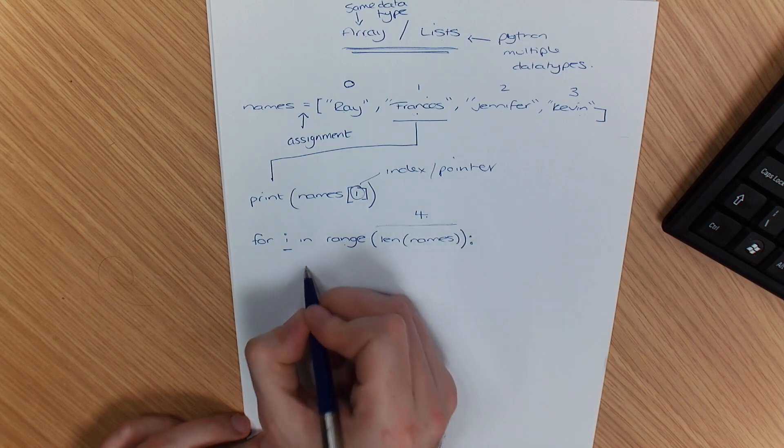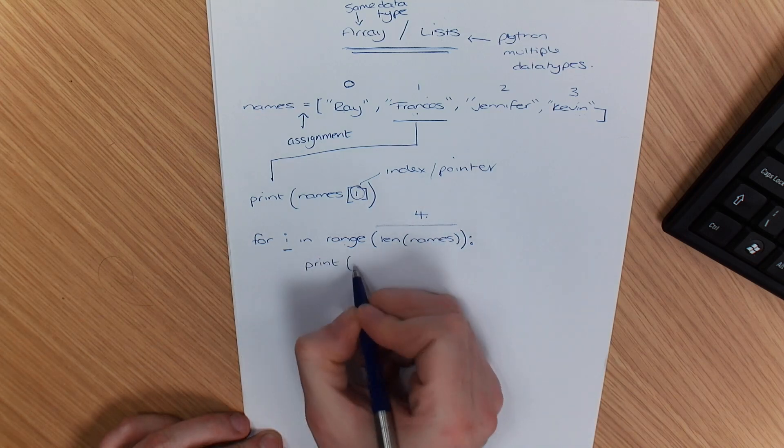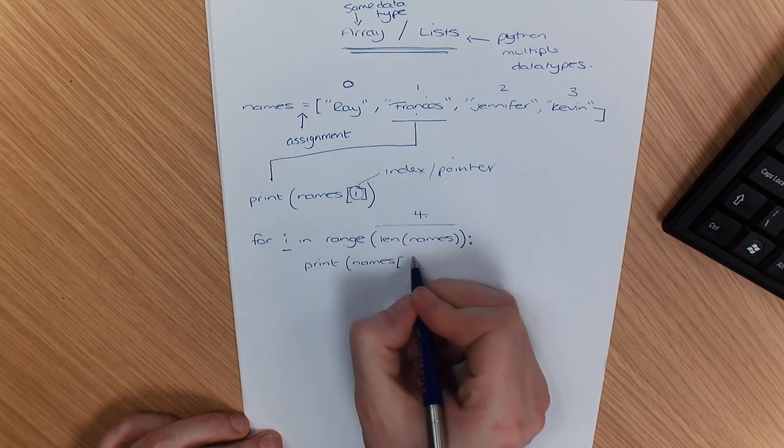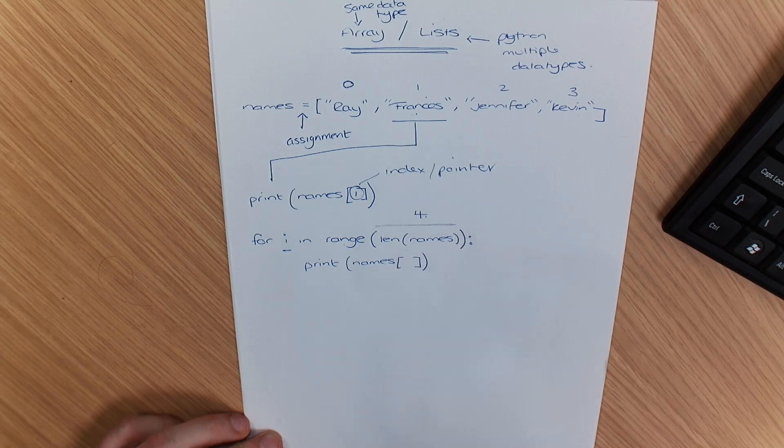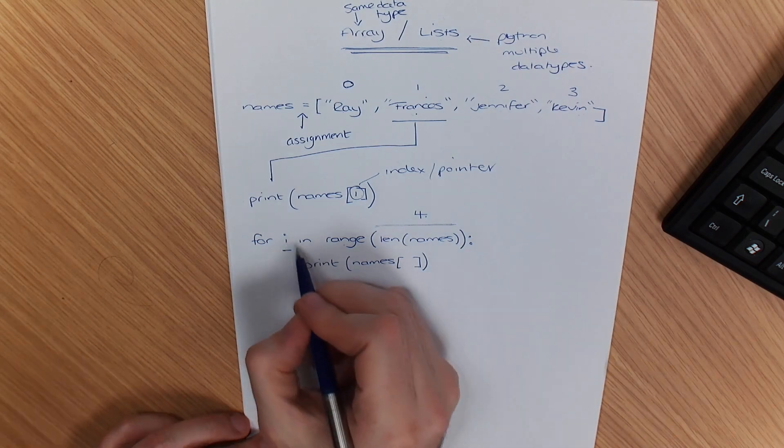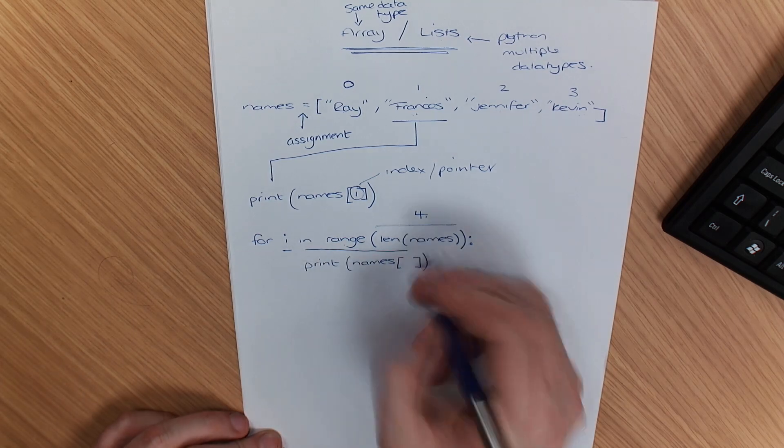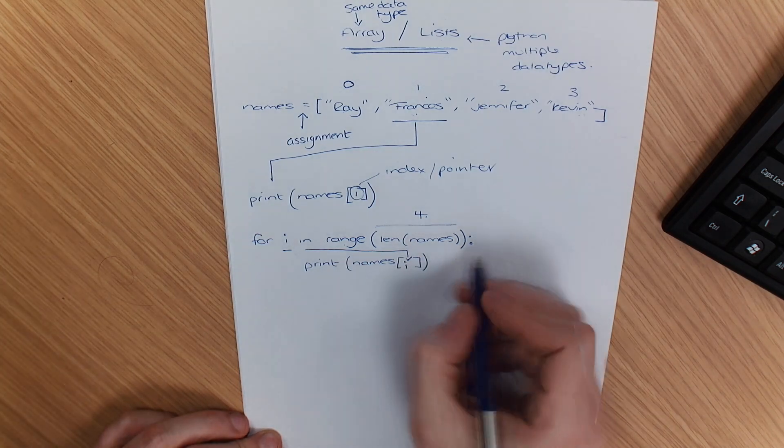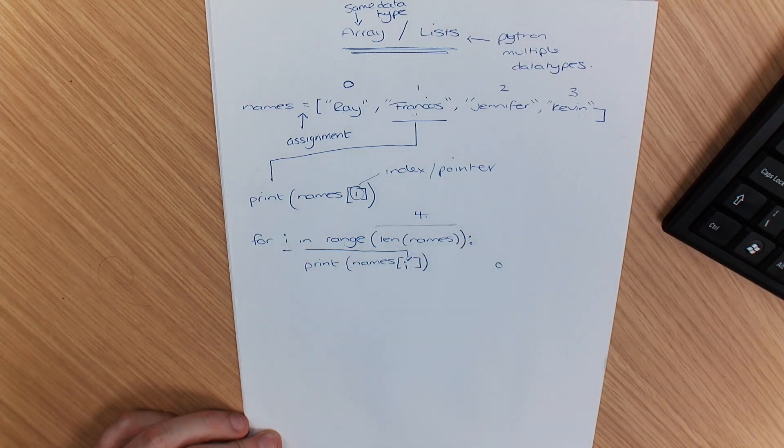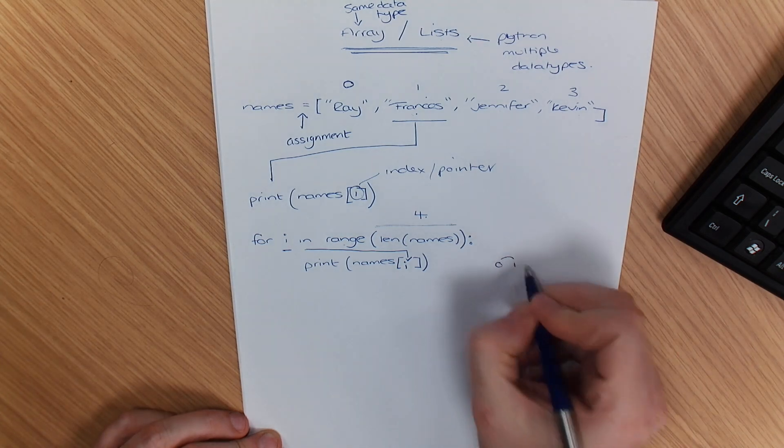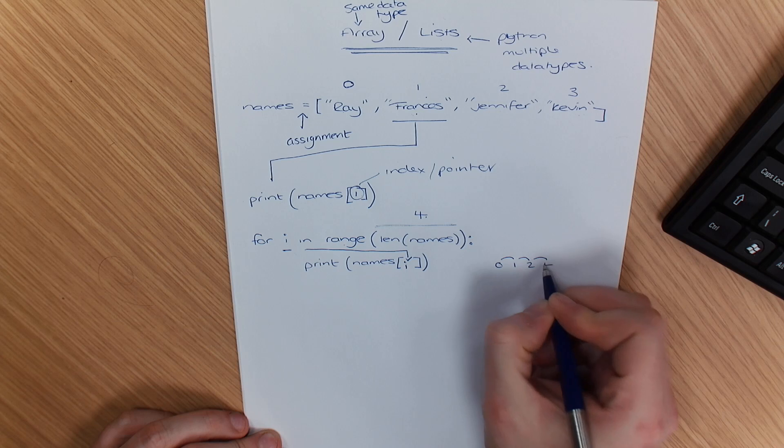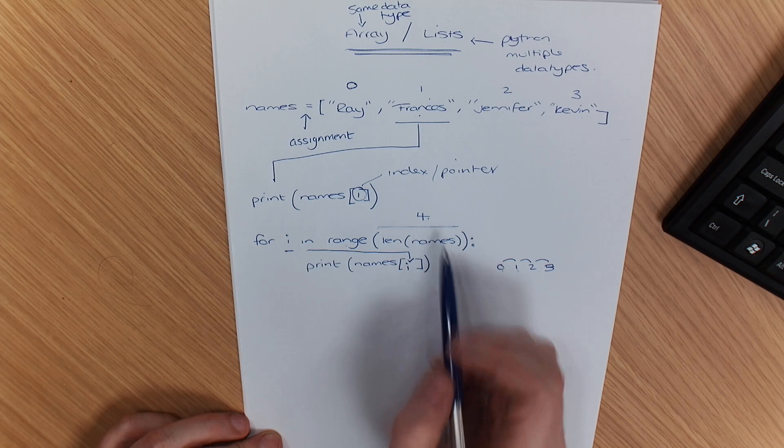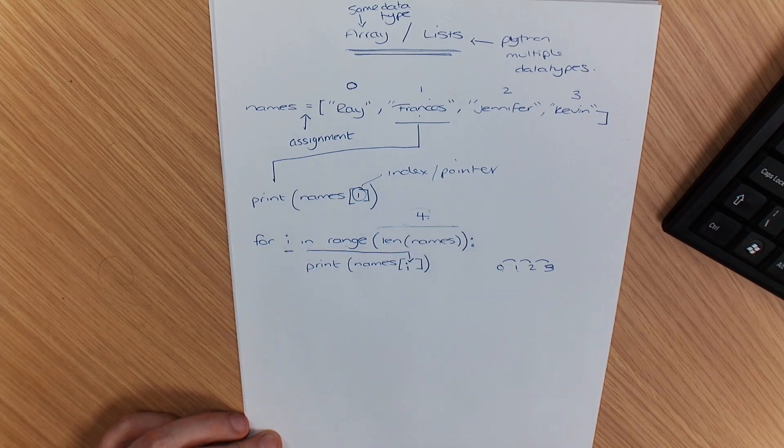So if I was to say, print names, instead of doing a specific number, I use the I that I've iterated with to do that. So I would go in there, because I increases each time. I would start at zero, but increase four times. That's what it's saying. So it's going to go from zero to one, to two, to three. So you've got four iterations of that. So this number here is saying how many iterations you've got. Is that making sense? Yeah.